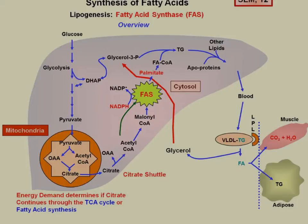Now, remember, the oxaloacetate is not going to be transported right back into the mitochondria as you might think. The acetyl-CoA is transformed into malonyl-CoA. But in order to move on from here, we need NADPH. So the oxaloacetate is acted on by malic enzyme, which produces NADPH and malate, and the malate is transported back into the mitochondria.